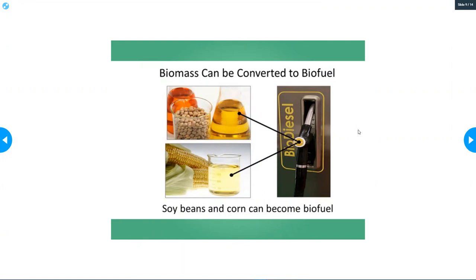One of the biggest things that people are using is soybeans and corn that become biofuel. It's kind of gross, but animal feces or animal poop can also be turned into biofuel, and there's lots of different things that can be done with biomass.